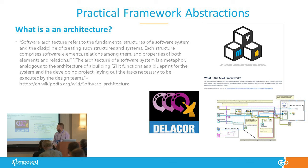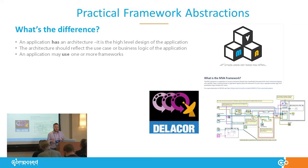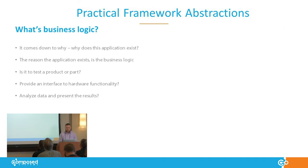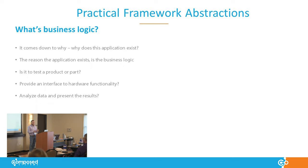A software architecture is different from a framework. An architecture is the design specific to a particular application — it may use a framework, but they're not quite the same thing. An application has an architecture and uses a framework. What is business logic? To me it really comes down to why — why does this application exist? What is it there to do? Is it to test a product? Is it a control system? An interface to hardware? Analyzing data results? That's the business logic.